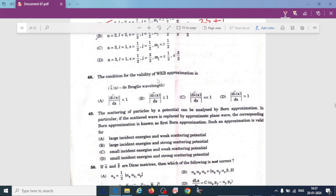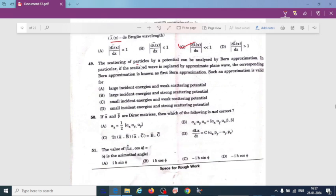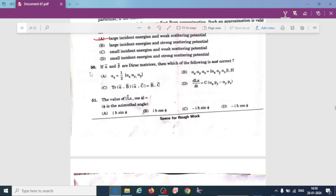Condition for the validity of WKB approximation is - we have given lambda of r, which is the de Broglie wavelength. So this is mod of the derivative with respect to x that must be less than 1. The scattering of particle by a potential can be analyzed by Born approximation. In particular, if the scattered wave is replaced by approximate plane wave, the corresponding Born approximation is known as first Born approximation. Such an approximation is valid for large incident energy and weak scattering potential.